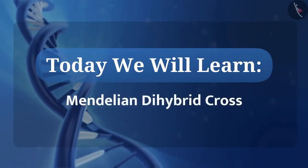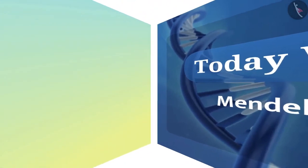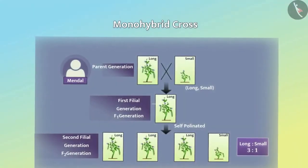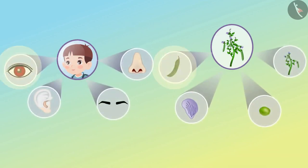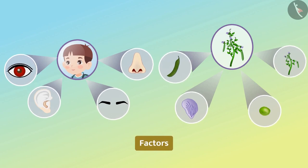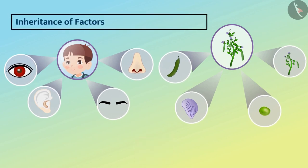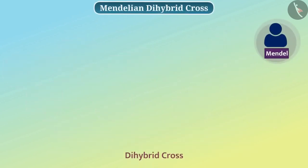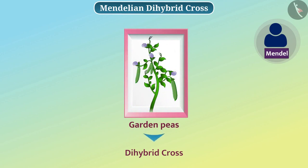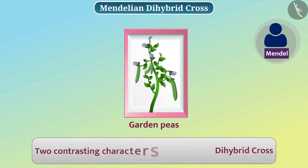In monohybrid cross, Mendel studied the inheritance of only one trait at a time. But in an organism, many different characters are present, and the factors that control them are also different. So the inheritance of these factors will affect each other. To understand this, Mendel performed a dihybrid cross of a garden pea plant. A cross in which two contrasting characters are studied is called dihybrid cross.